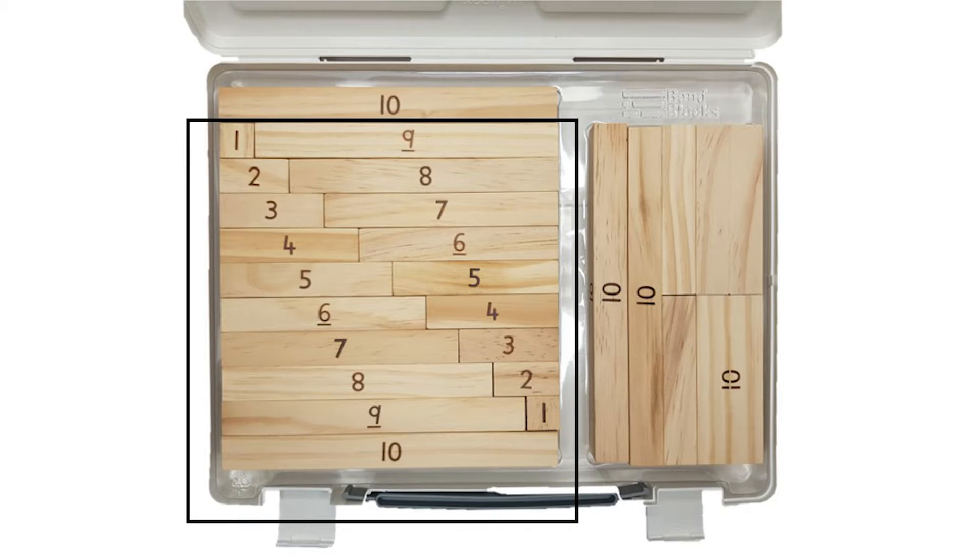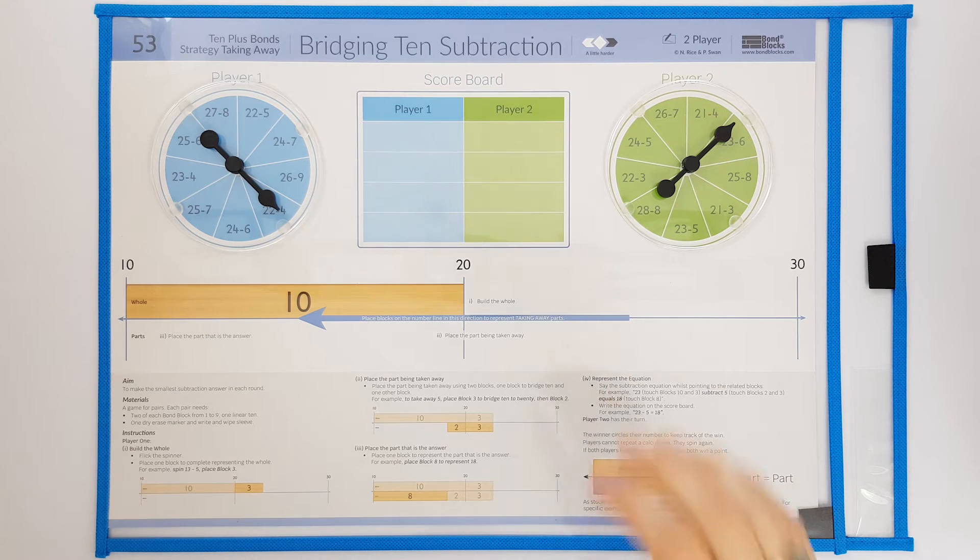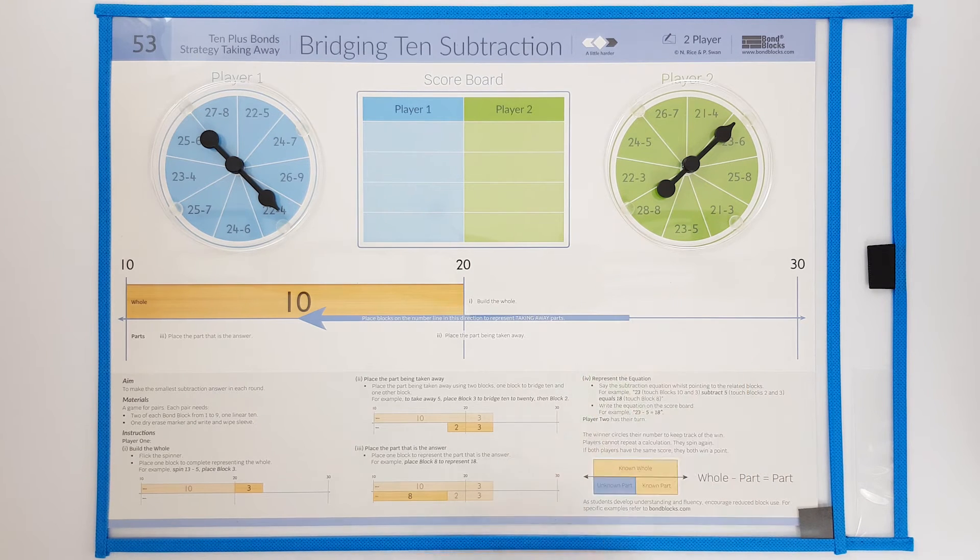To complete this activity you will need 2 of each bond block from 1 to 9 and 1 linear 10. If you have original boards, please place them inside a write and wipe sleeve.